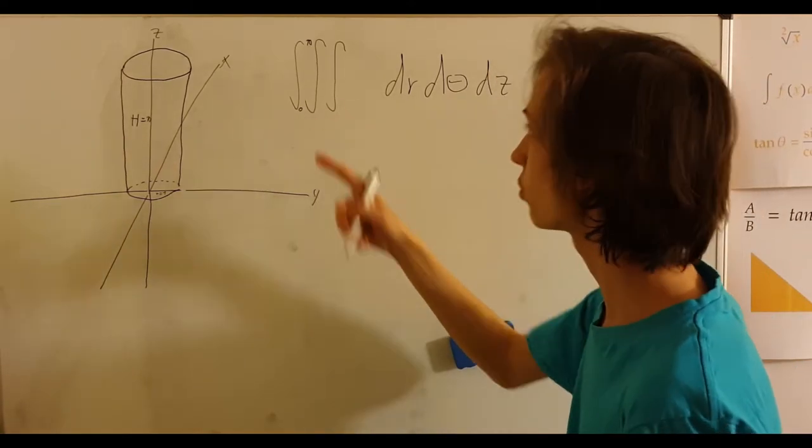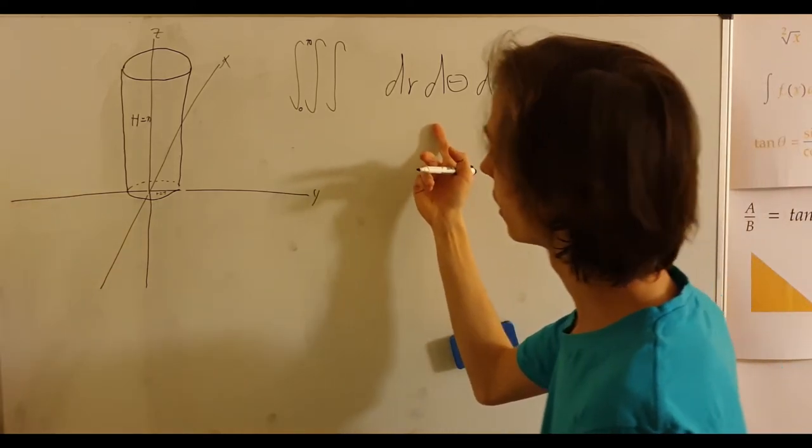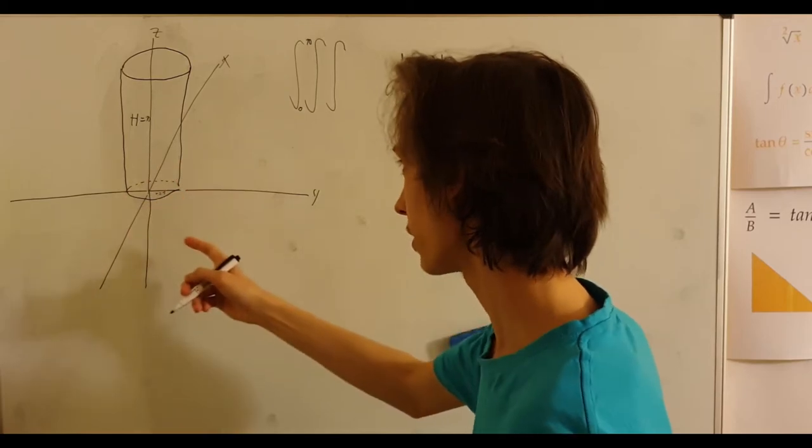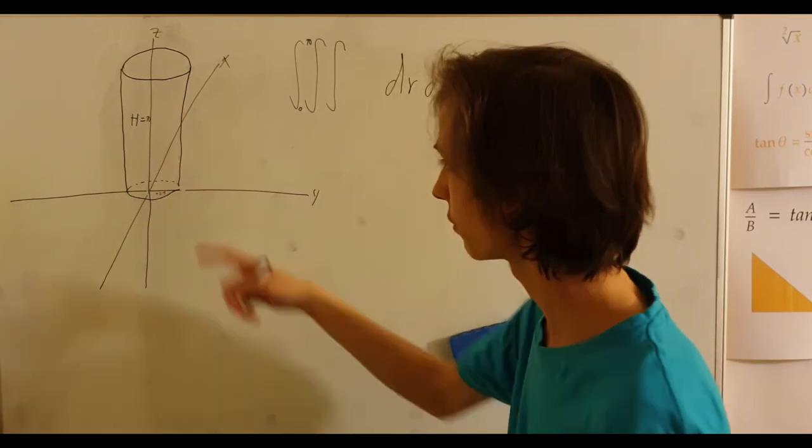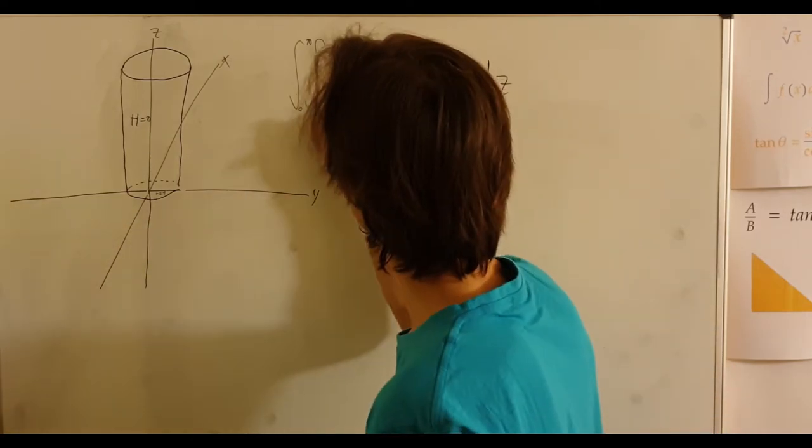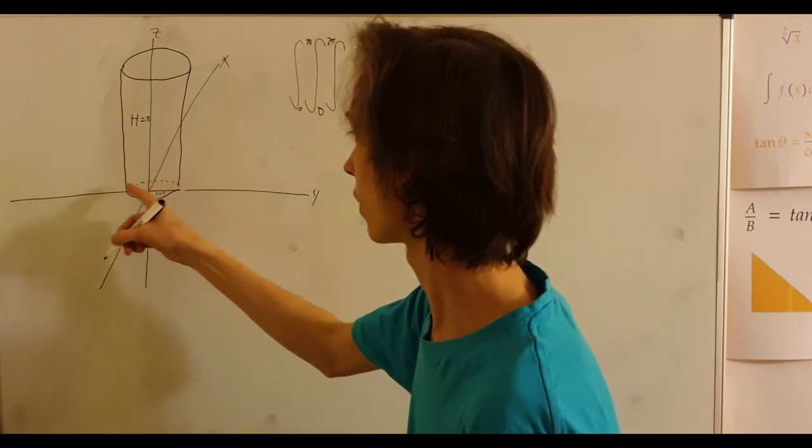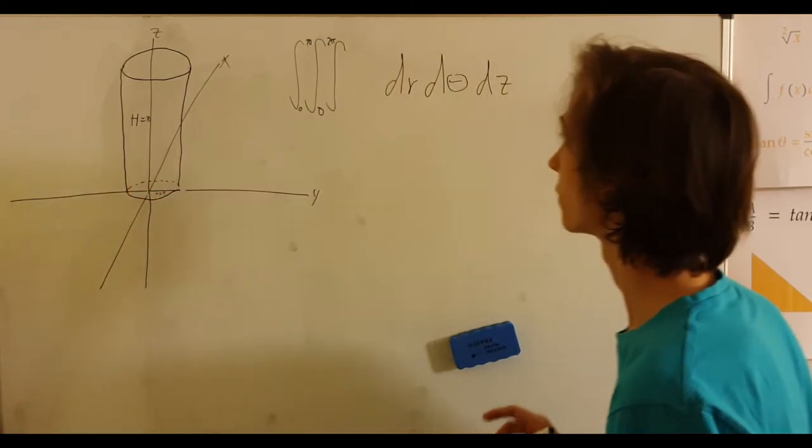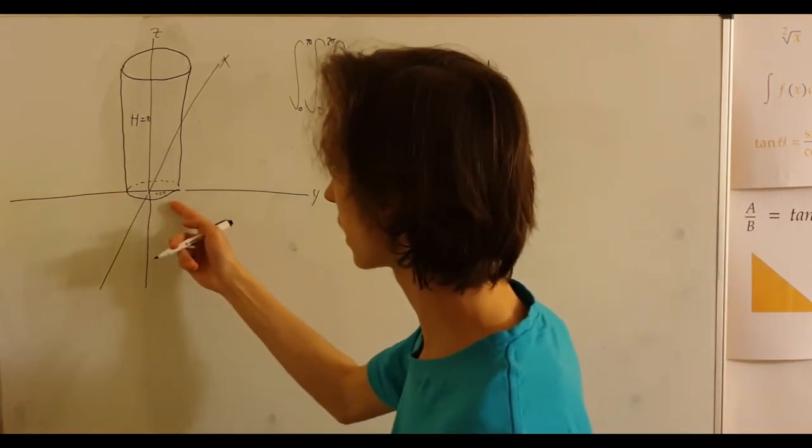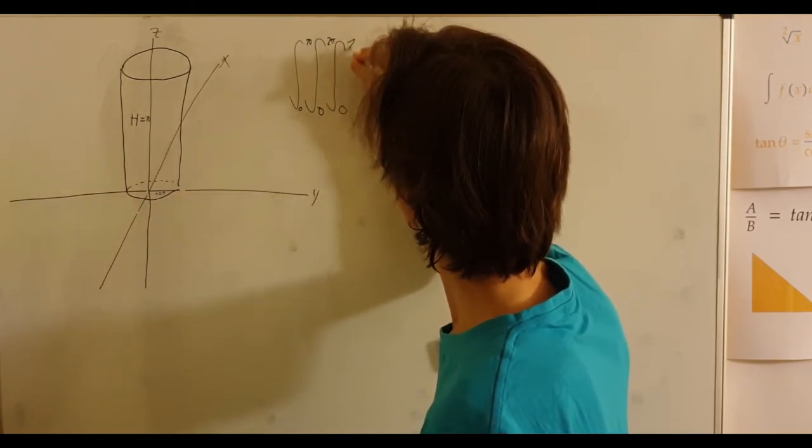The bound for the second one will be from, for the d theta. Because we're taking the entire volume of it, we're not taking just the half above the x-axis or below it, we're taking 0 to 2 pi. Because that's the entire circle. And then dr, because it's the entire radius that we're taking, is from 0 to 1.